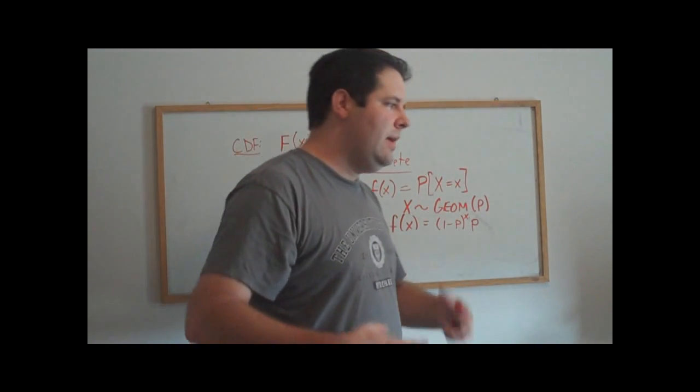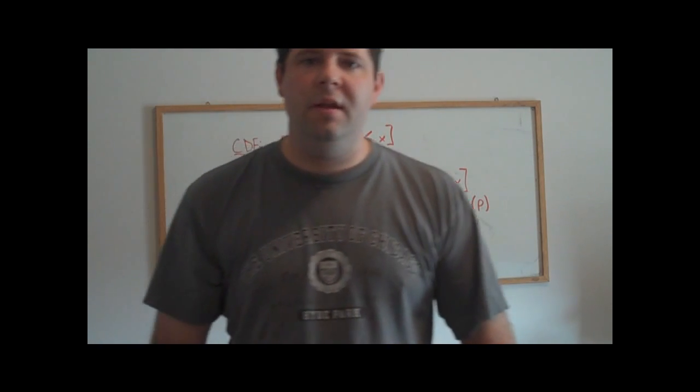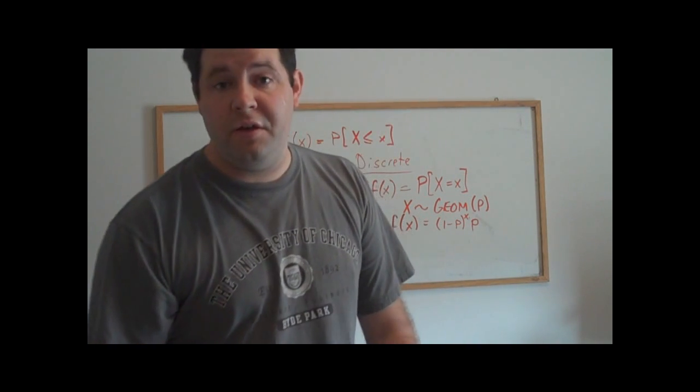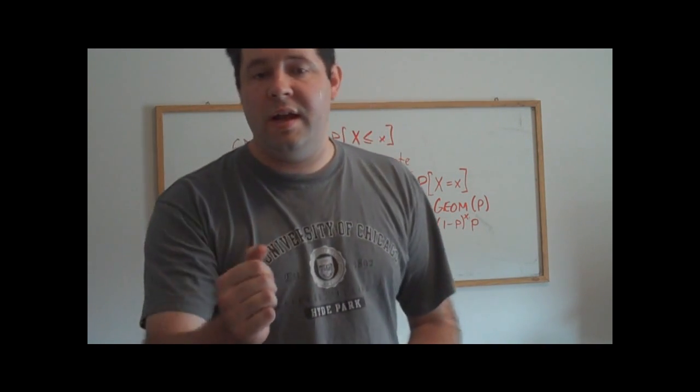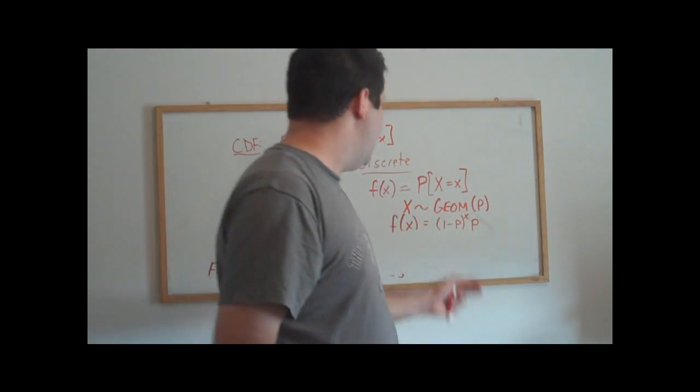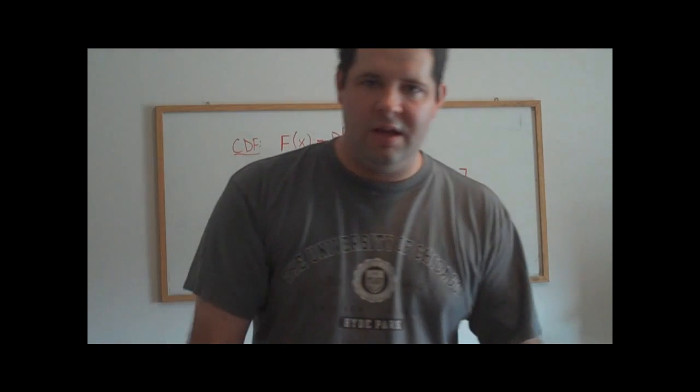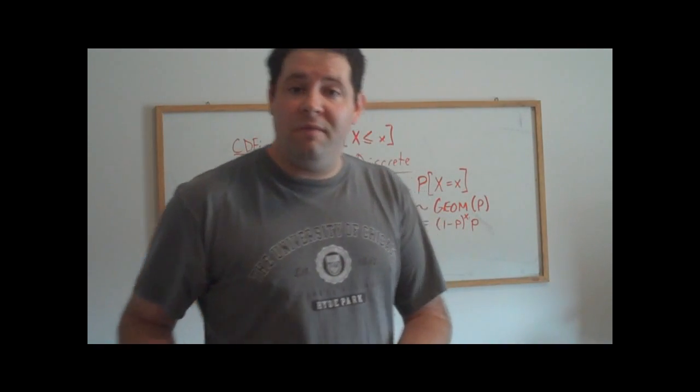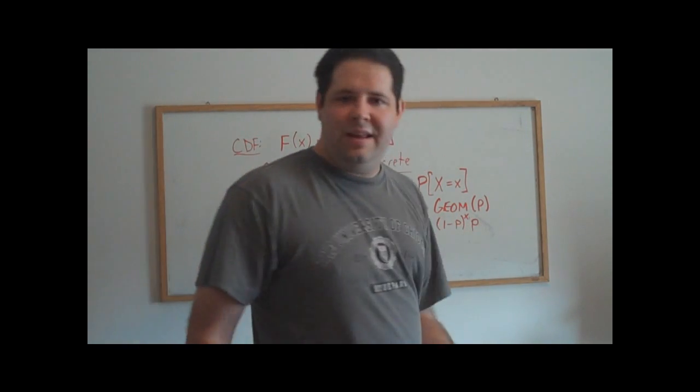So the way to conceptualize this is the number of failures before you get your first success. When you think about a geometric random variable with a parameter p, let's take an example where p equals one half. If I flip a coin, I can have zero failures before I get my first success. If I flip my coin and I get a head on the first try, that means that I had zero failures before I had my first success.